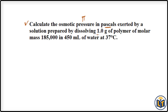The solution is prepared by dissolving 1.0 gram of a polymer whose molar mass is also given. The solvent volume is 450 ml of water at 37 degrees Celsius. From this data — the mass, molar mass, volume, and temperature — we can calculate the concentration of the solution.